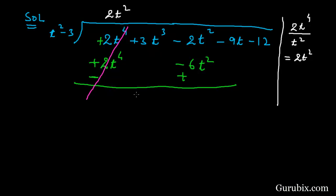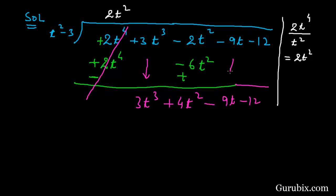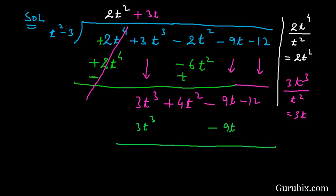After cancellation we bring down 3t cubed, and subtracting minus 2t squared from 6t squared gives us 4t squared. We bring down minus 9t and minus 12. To find the next term in the quotient, we divide 3t cubed by t squared, giving us 3t. We multiply 3t with t squared minus 3 to get 3t cubed minus 9t, then change the signs to minus 3t cubed and plus 9t.